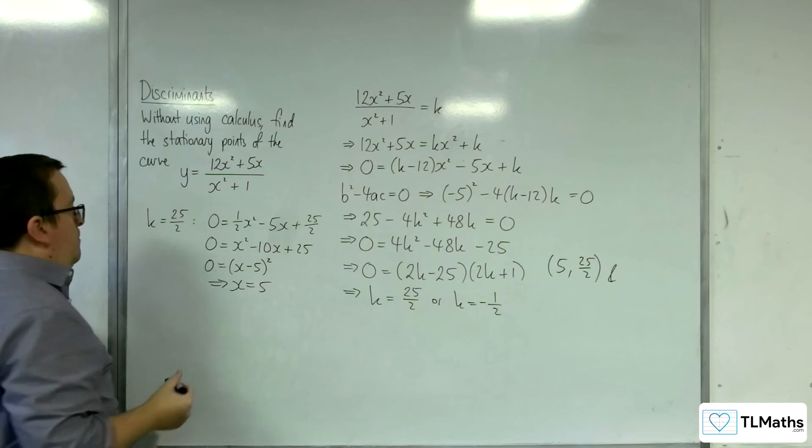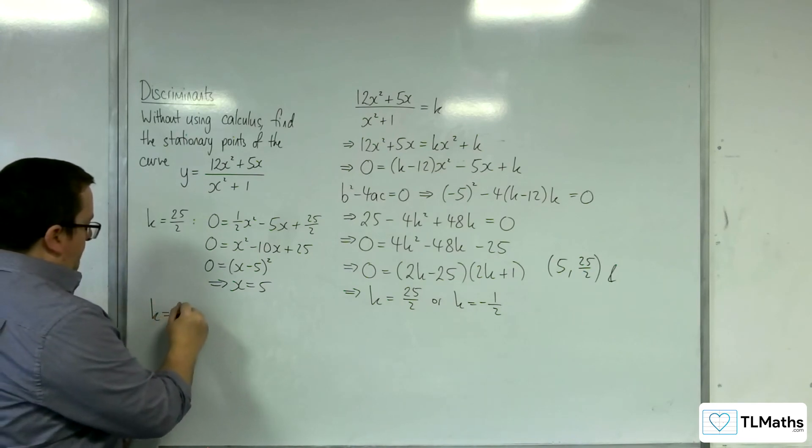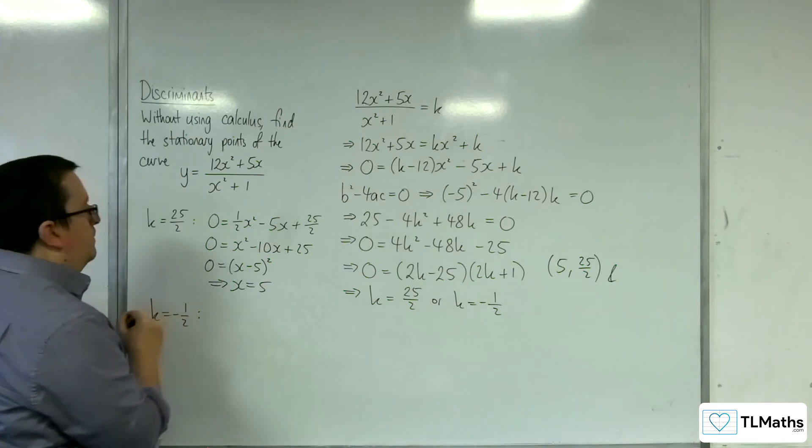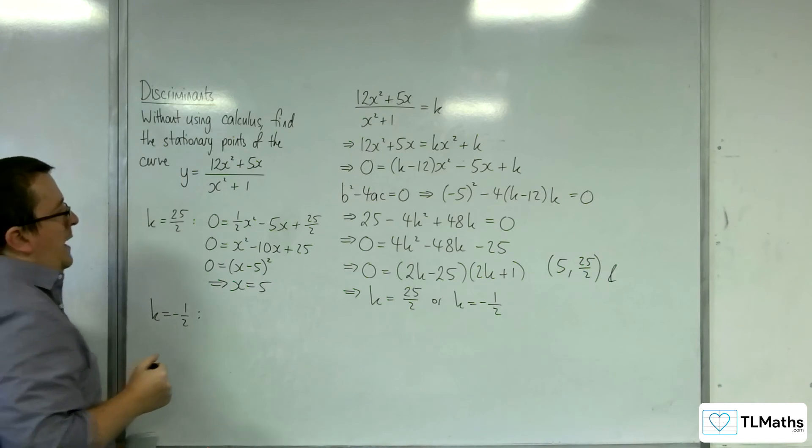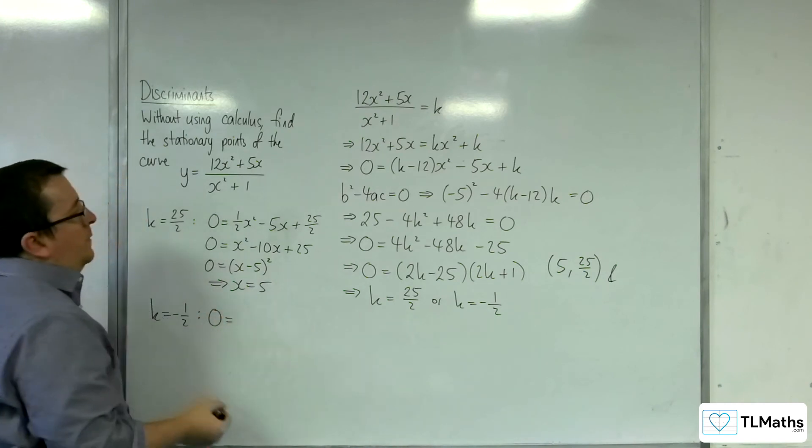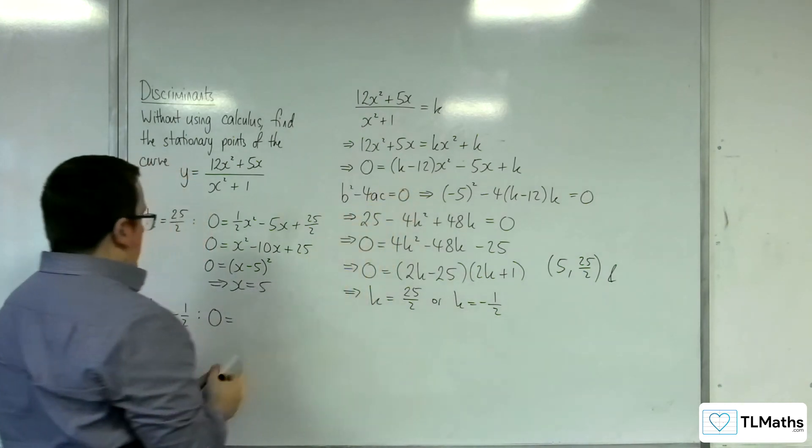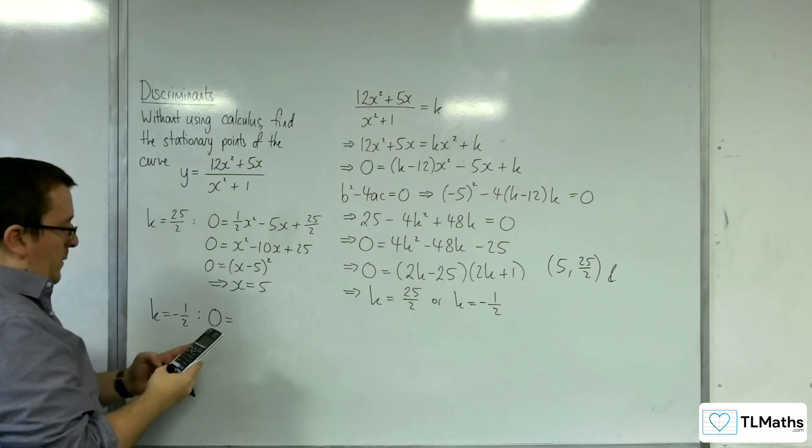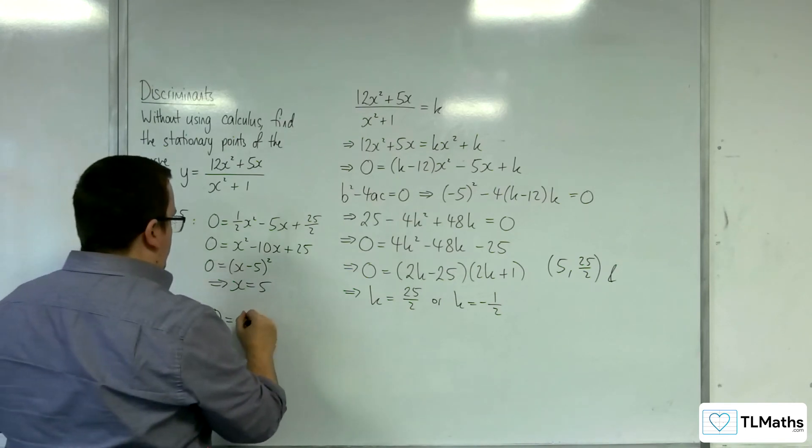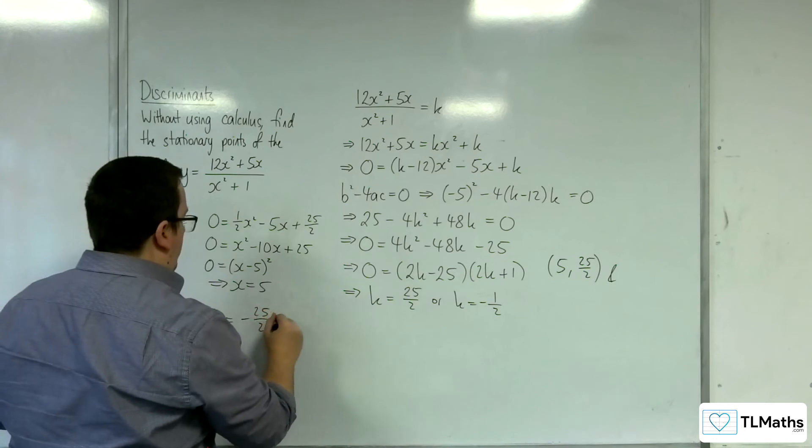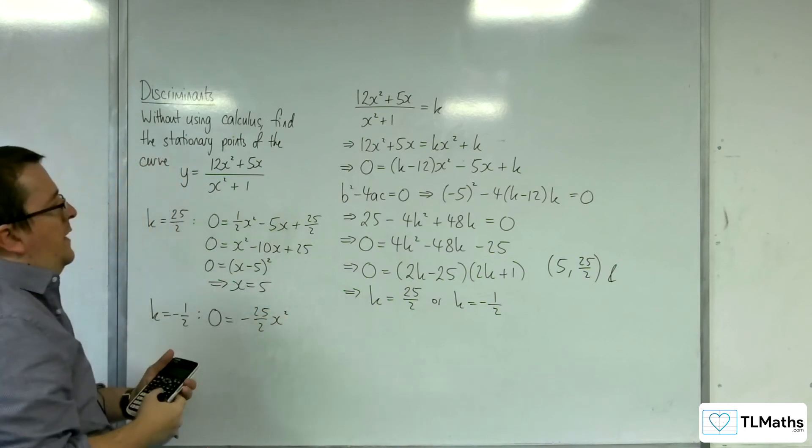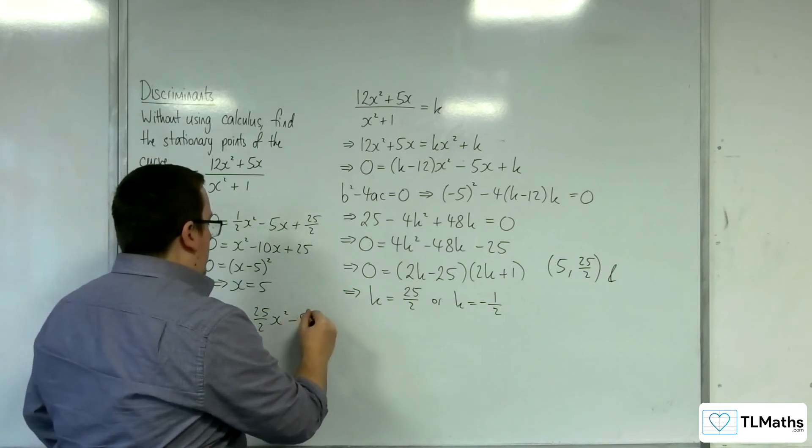And for k equals minus 1 half, substituting that in, we're going to get minus 1 half, take away 12. So, minus 25 halves, x squared, then take away 5x, take away a half.